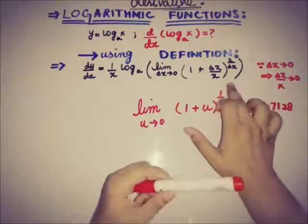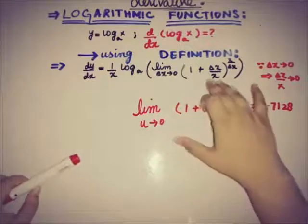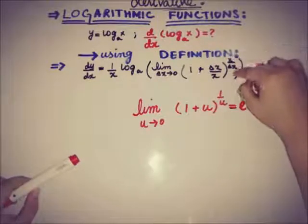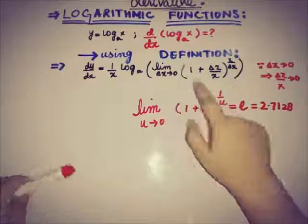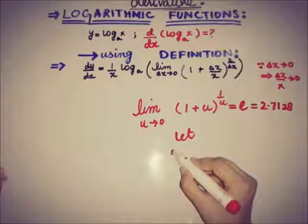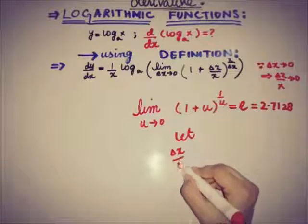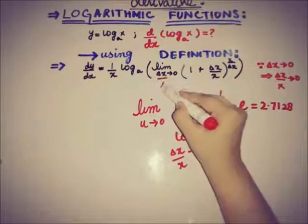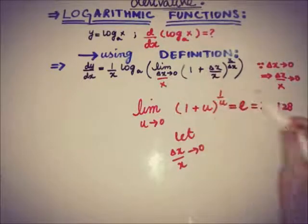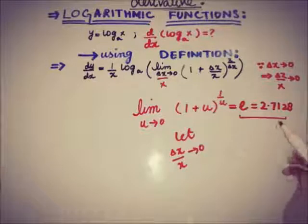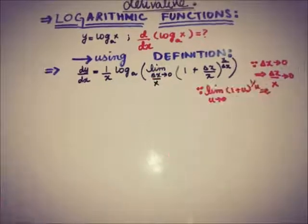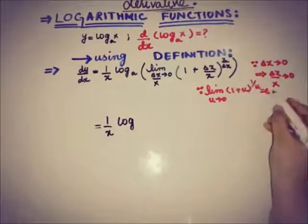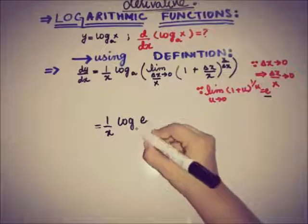This expression or this limit will be of the same type. There is 1 plus delta x by x, that is x by delta x, and also limit approaches to 0. If delta x by x approaches to 0, we can use this.